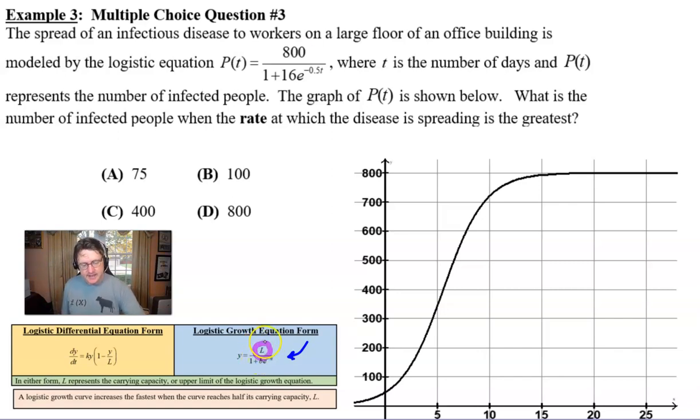So as we said, the very first thing that one would need to do is extract the value of L immediately. Understand that L would be this numerator while you're in this form. We don't need the B of 16 or the k value of 0.5, those aren't important. If L, our carrying capacity is 800, then according to this statement, logistic growth will occur the fastest when we reach half of that value. And half of that value is certainly going to be 400. Now we see that that is our answer C and that's the one that we're going to go with.